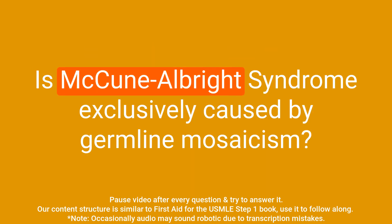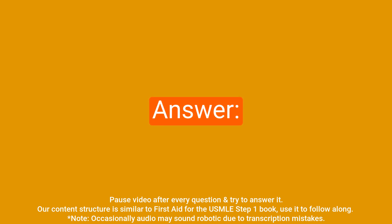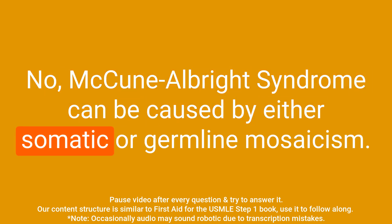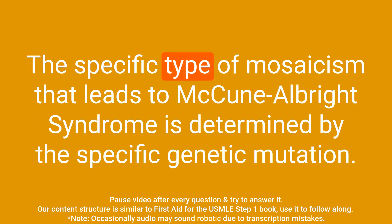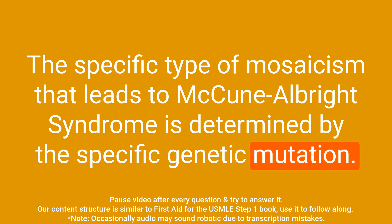Question: Is McCune-Albright syndrome exclusively caused by germline mosaicism? Answer: No, McCune-Albright syndrome can be caused by either somatic or germline mosaicism. The specific type of mosaicism that leads to McCune-Albright syndrome is determined by the specific genetic mutation.